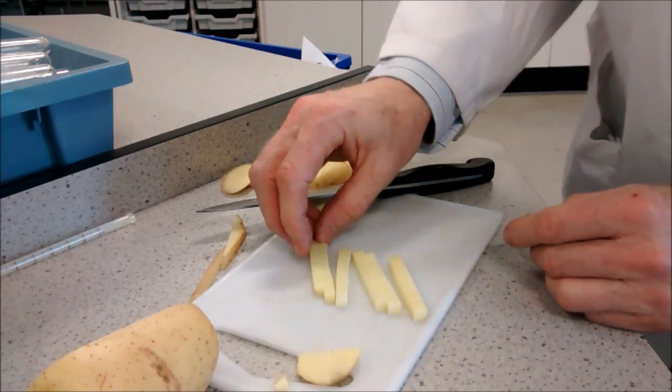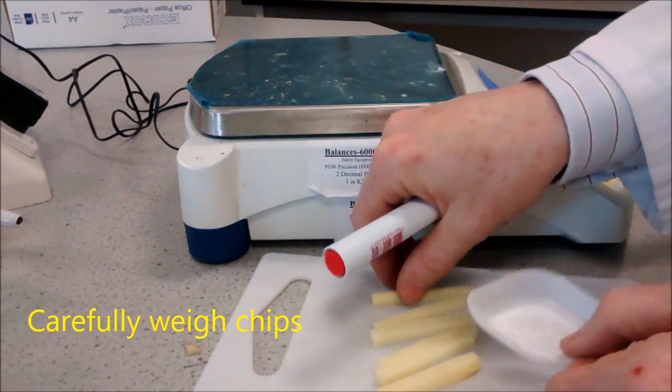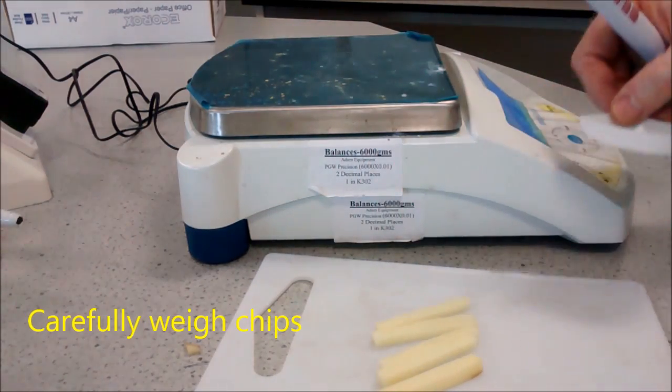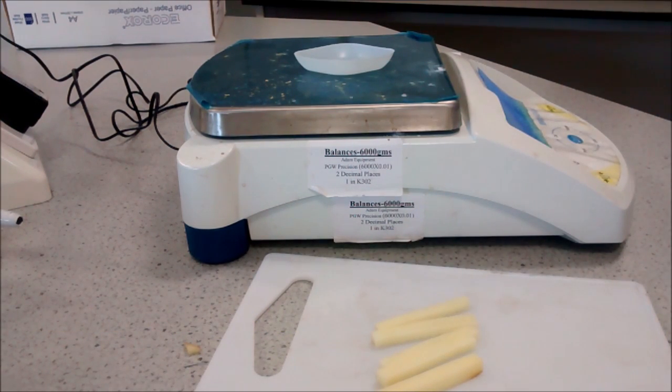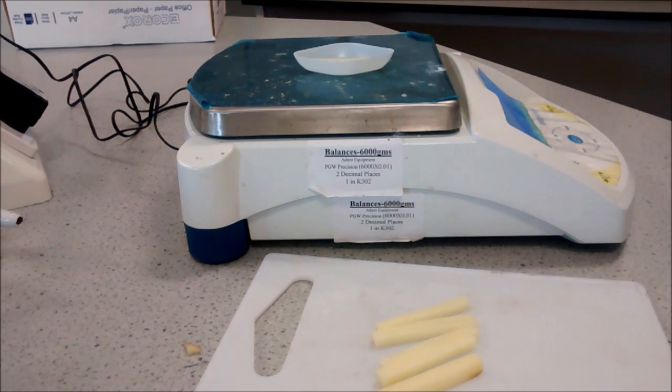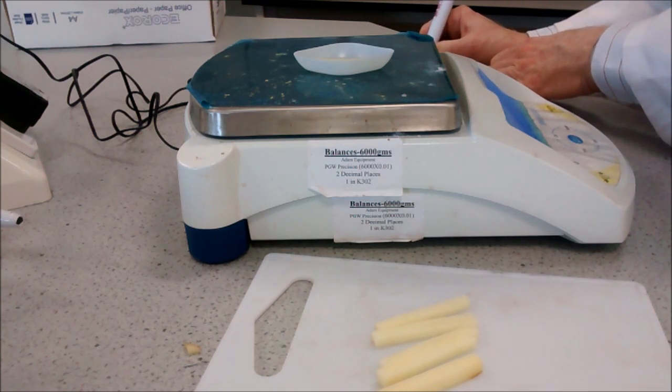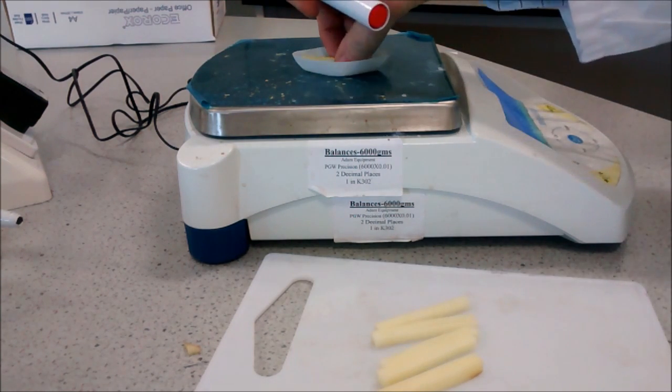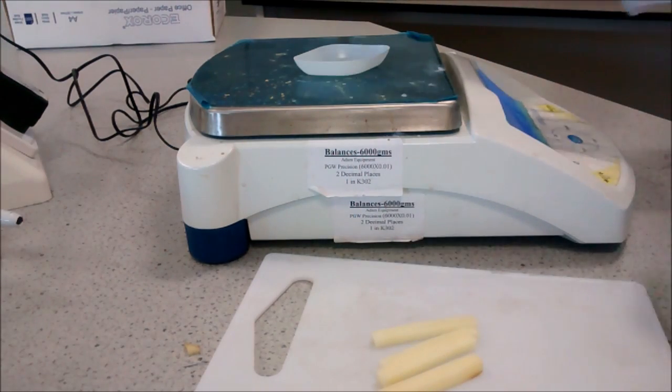These chips will need to be weighed. You need to weigh each chip using the weighing boat, so tare the balance first, weigh the chip, record the weight, and keep them separate so you know which one is which. So next one,